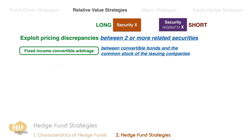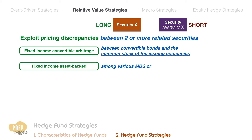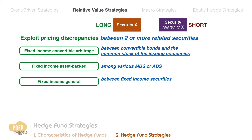Fixed income asset-backed is to exploit pricing discrepancies among various mortgage-backed securities or asset-backed securities. Fixed income general is to exploit pricing discrepancies between fixed income securities of various types.